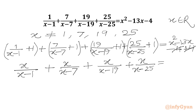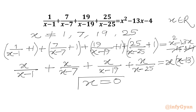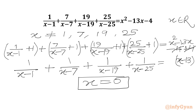This equals x squared minus 13x on the right-hand side. We can take x common, so we write x times (x minus 13). If we plug in x equal to 0 it satisfies the equation. So we remove x from both sides, leaving 1 on each side. Our first real solution is x equal to 0.